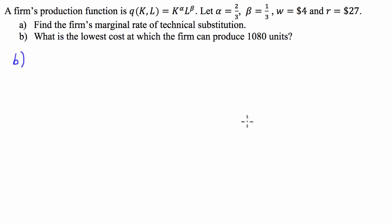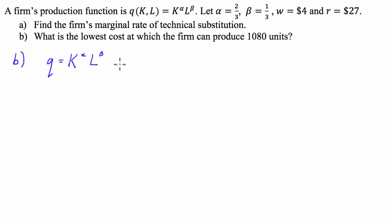On to part B, which asks us to find the lowest cost at which the firm can produce 1,080 units of output. To solve this we need two equations: the first is the production function Q equals K to the alpha times L to the beta; and the second is the cost-minimization condition that the marginal rate of technical substitution must equal the negative of the wage rate over the return on capital.